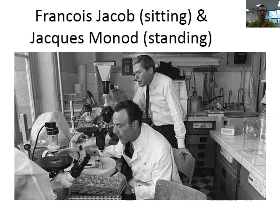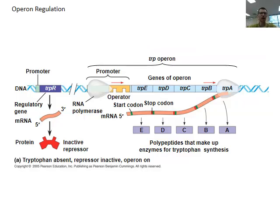In 1961, Francois Jacob and Jacques Monod discovered what was called an operon system, which is essentially like an operator that controls a gene. In order to survive, our bodies need amino acids to build proteins. Some amino acids can be consumed from the environment — kind of like in a Mario video game when you're running around collecting gold coins. However, sometimes you can't find the amino acids you need, so an organism needs to make them on their own.